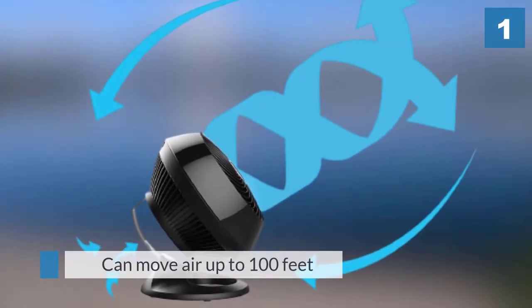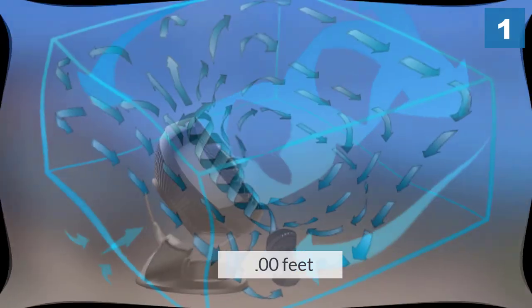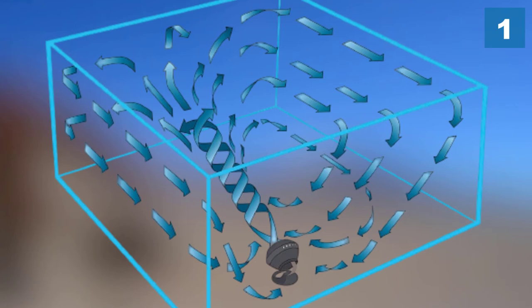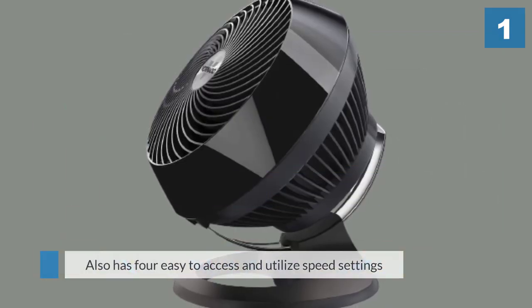Vornado has a long built reputation for getting a lot out of a small package. This is especially true for the 660, as this tiny Titan can move air up to 100 feet. It also has four easy to access and utilize speed settings, making it super simple to operate.